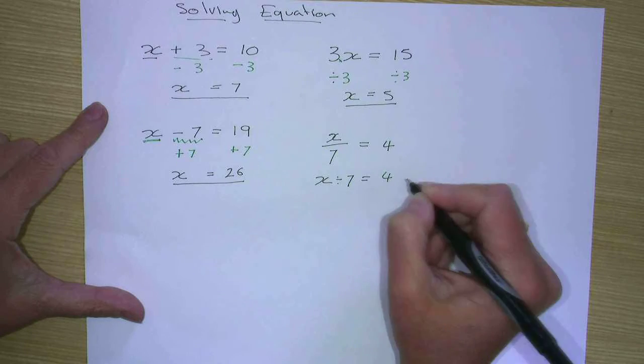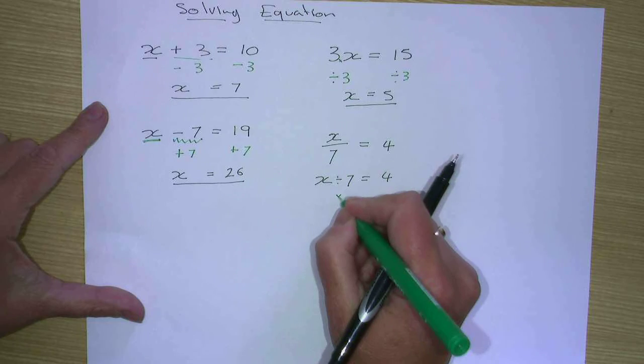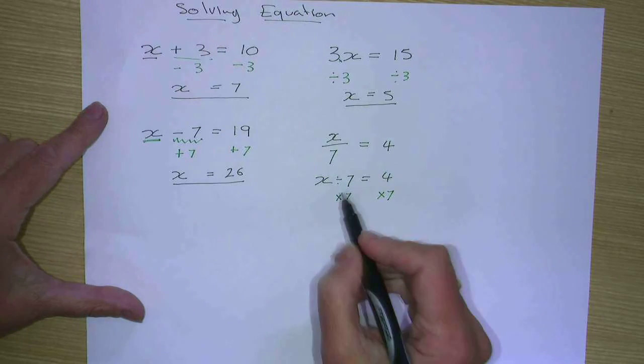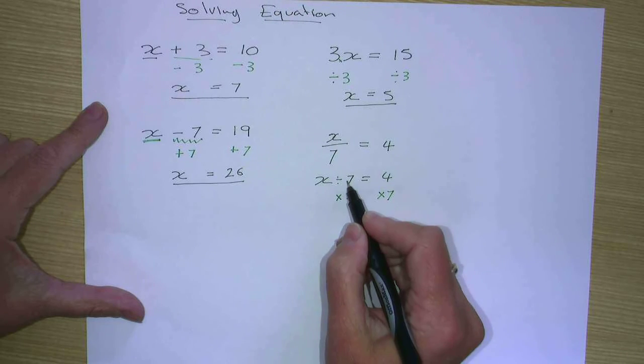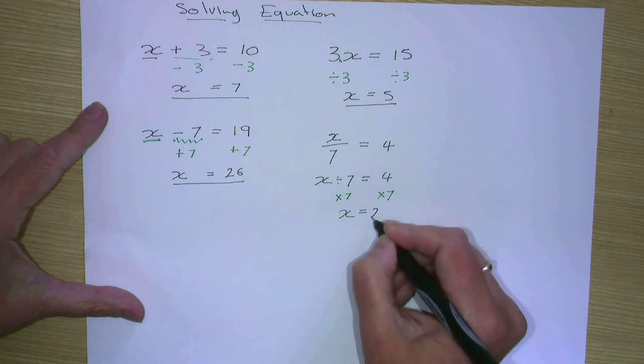So to get rid of the divided by 7, we need to multiply both sides by 7. Because divided by 7 times 7 gives us 1. So x divided by 7 times 7 is x. 4 times 7 is 28.